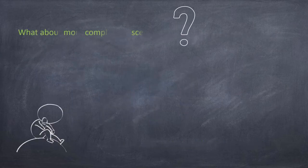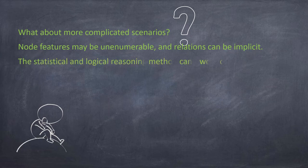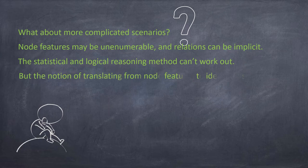What about more complicated scenarios? In large-scale information networks, node features may not be enumerable, and the relations between nodes can be implicit. Thus, the statistical and logical reasoning methods can't work out, but the notion of translating from node features to node identities stays valid.